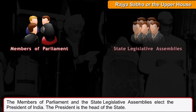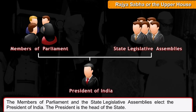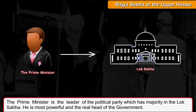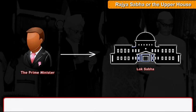The members of Parliament and the State Legislative Assemblies elect the President of India. The President is the Head of the State. The Prime Minister is the leader of the political party which has majority in the Lok Sabha, and is the most powerful and real head of the government.